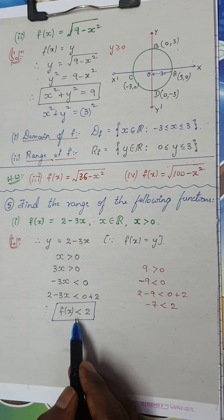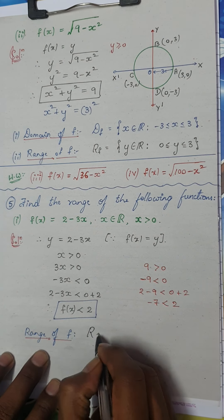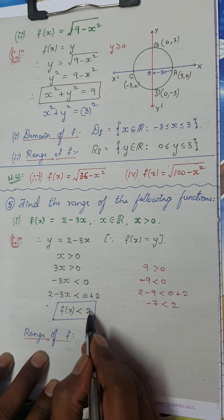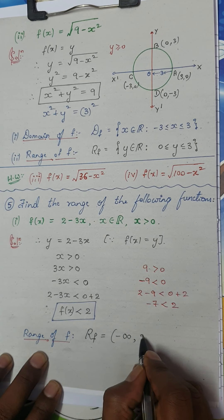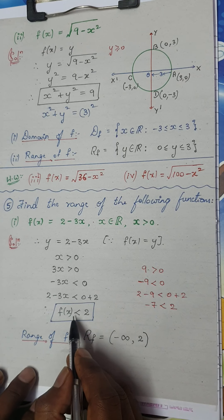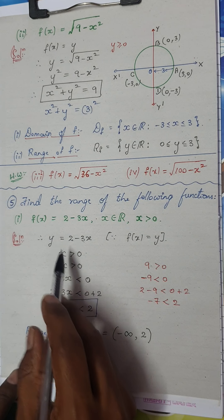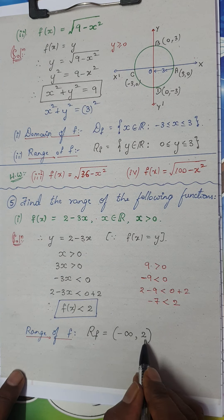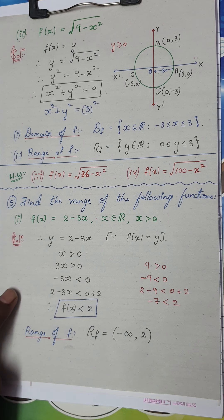Strictly less than 2 means the range of f includes all elements to the left of 2. So the range of f is (-∞, 2) - from minus infinity to 2, both as open intervals since it is strictly less than 2. If it were less than or equal to, I would use a closed interval. So the range of f(x) = 2 - 3x is (-∞, 2).